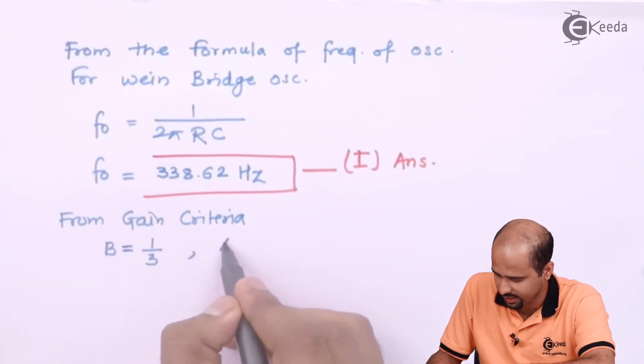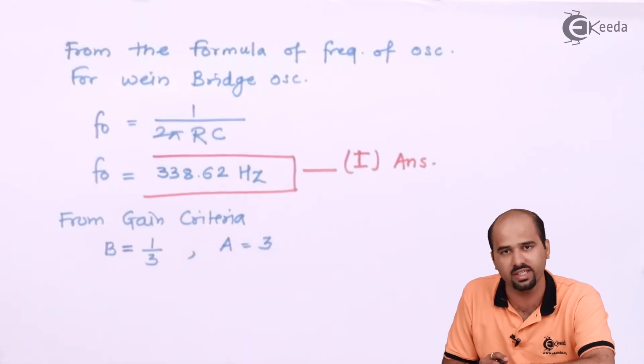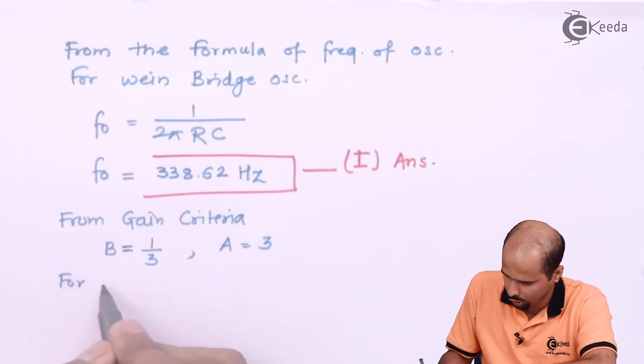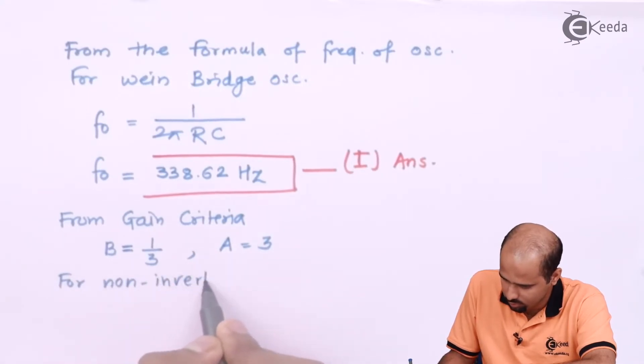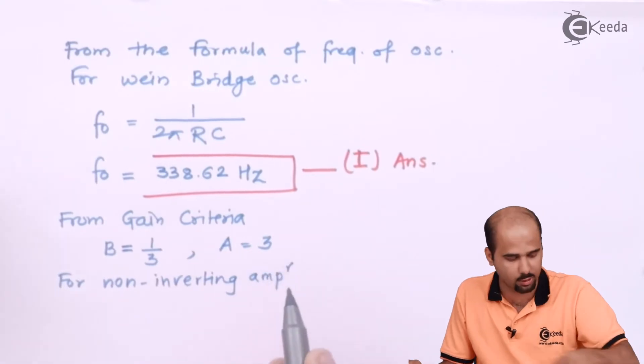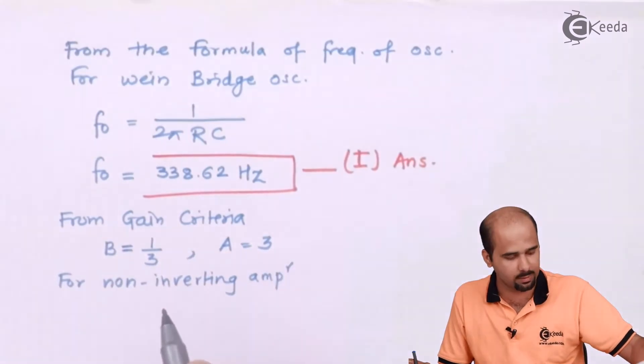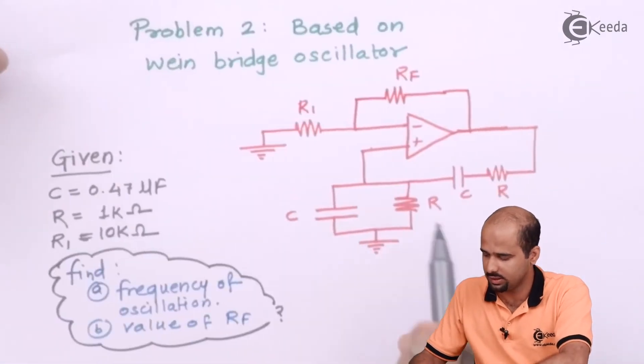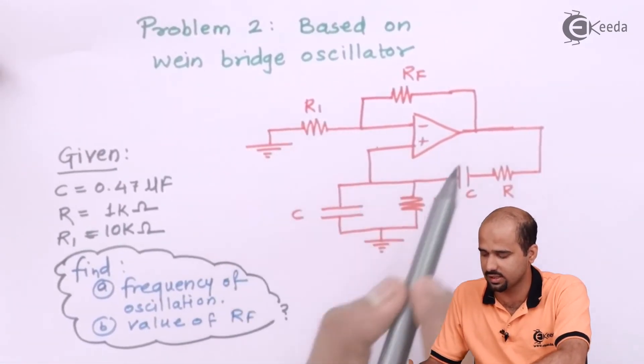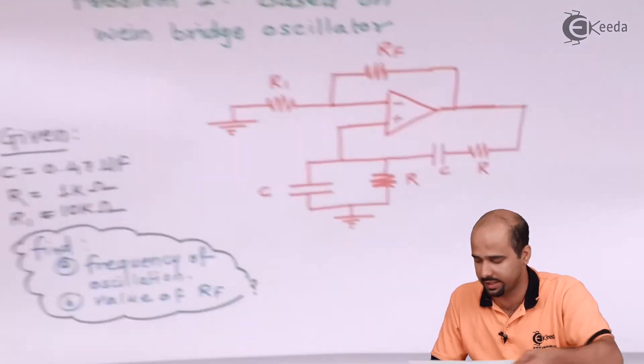So I have to say that A is equal to 3, and what is A for non-inverting amplifier? Because I know that the input is given from here, so this is nothing but the example of non-inverting amplifier.